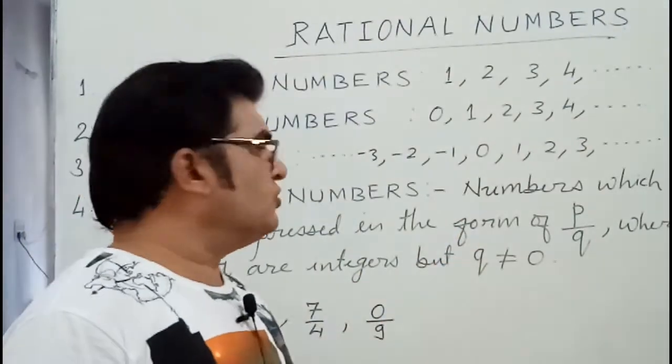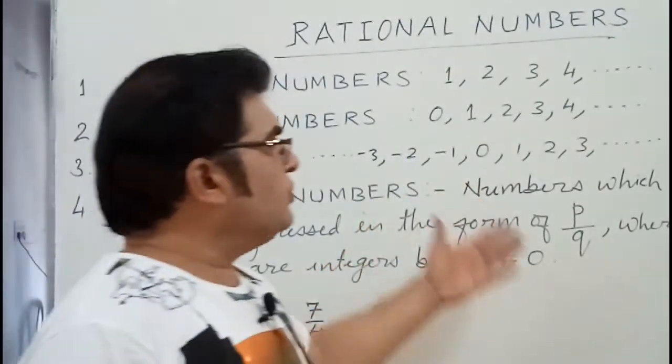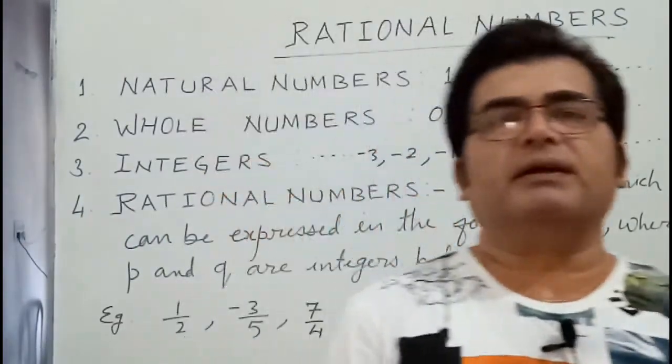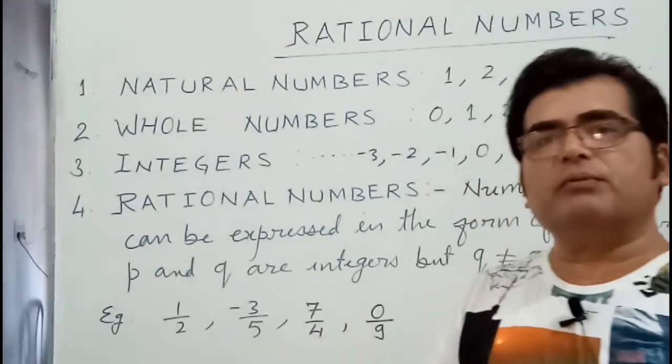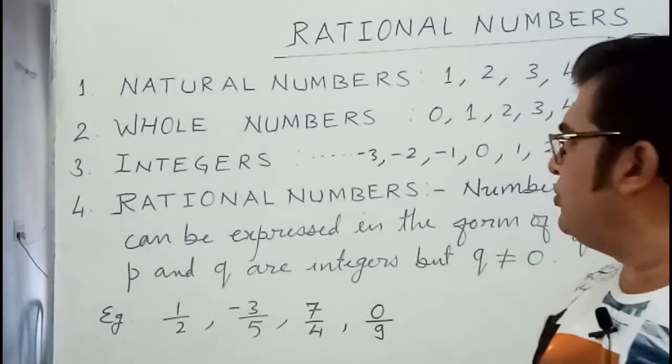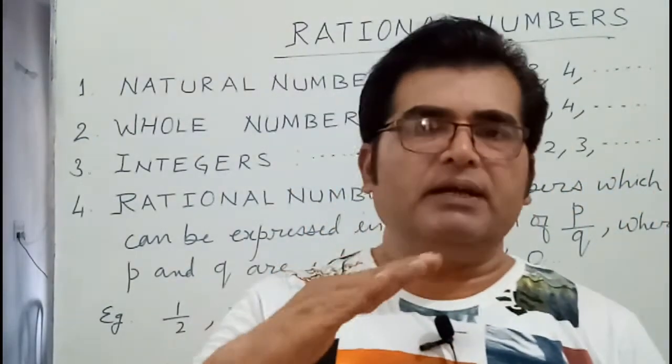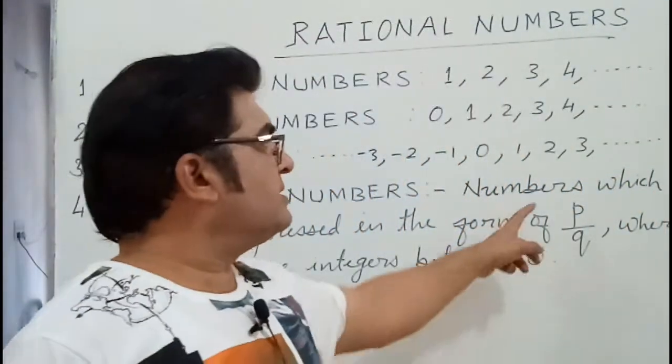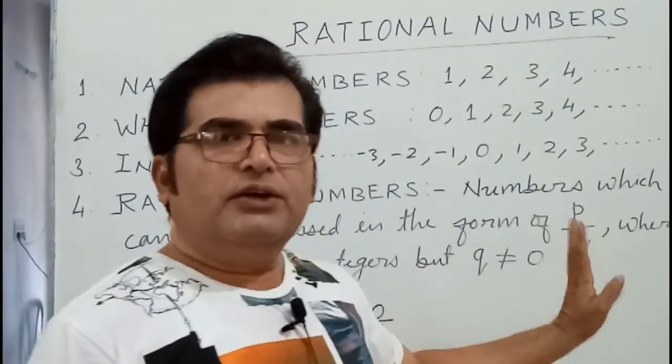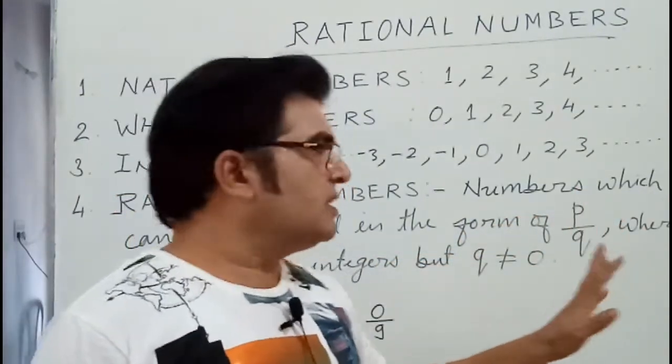So you have to understand the meaning of it, which can be expressed in the form of P upon Q. P upon Q means numerator and denominator. Numbers which are having numerator and denominator: P is the numerator and Q is the denominator, but the condition is there.